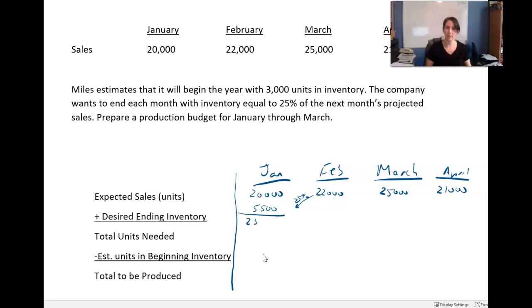Okay, so I want to make what I need for the current month, plus I want to make a little bit extra. I want to make 25% of next month's projected sales. So I want to get a head start on my February numbers. So 22,000 times 25% is going to be 5,500. So that means that I need to make in January 25,500 units. Those are the total units that I need. Now, I need to make 25,500, but are my shelves bare? From what happened in December, do I still have some leftover? It actually tells me up above I'm beginning the year with 3,000 units already in inventory. So I need 25,500. I already have 3,000 sitting on my shelves from the previous month. So really what I need to make this month is 22,500 units.